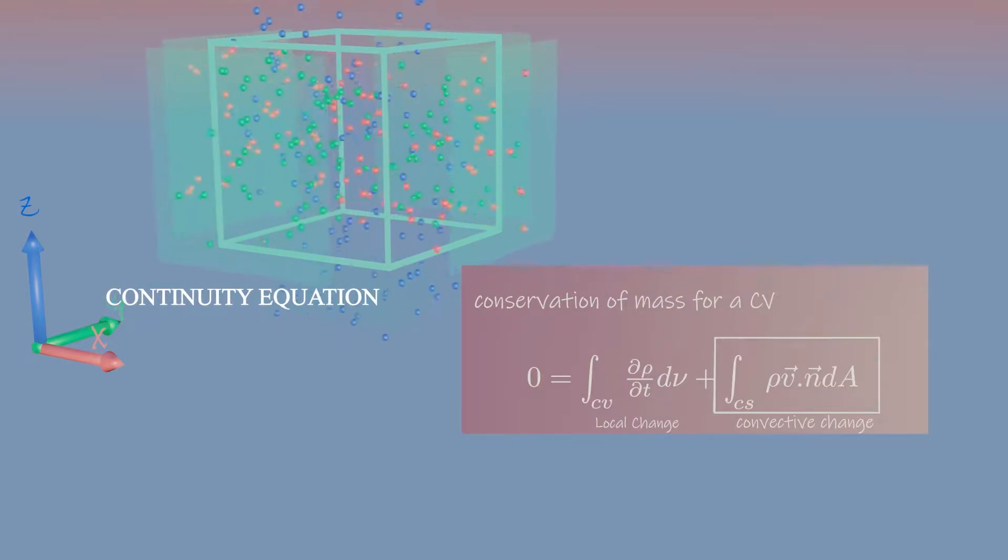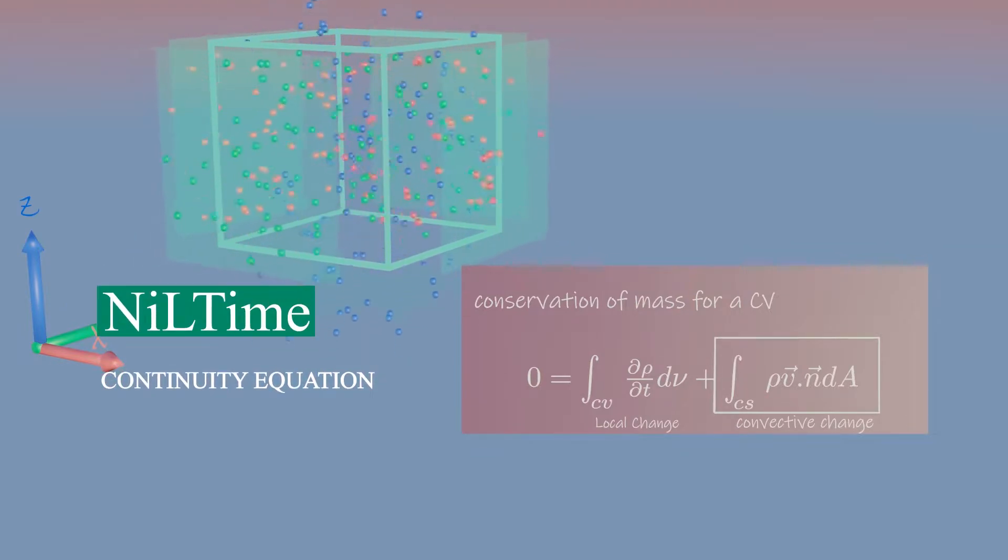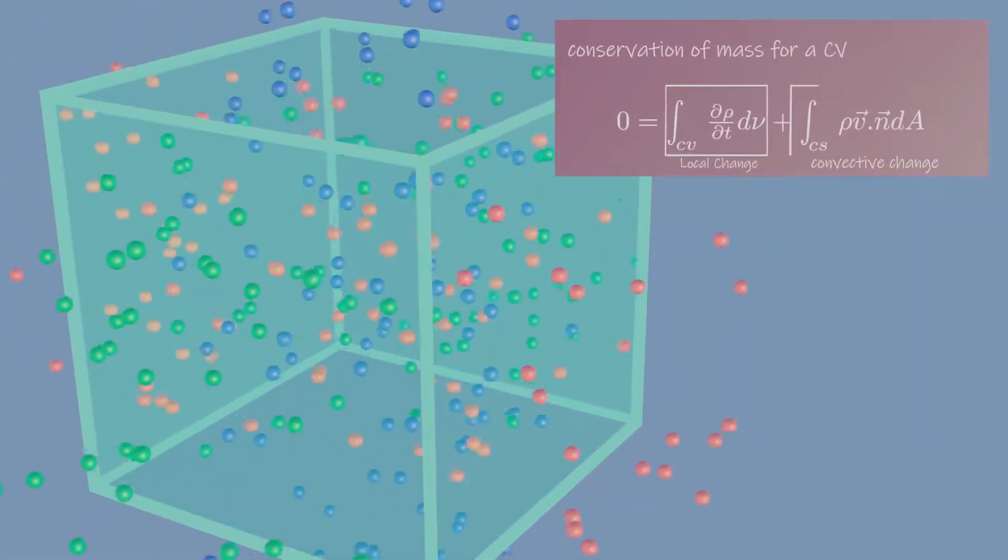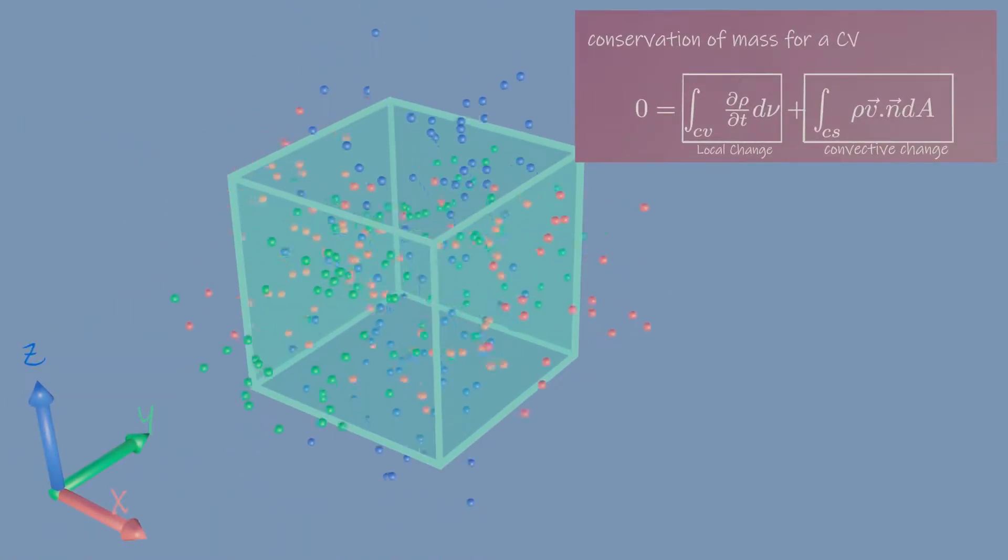The control surfaces are the six sides of the cube. Note that this term happens inside control volume, whereas this term happens on control surface where mass enters and leaves.